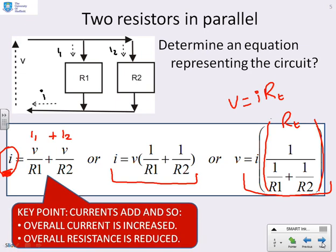So what are the key insights? The currents add, and so the overall current is increased. I've got more current with a parallel circuit than I would if I just had R1 on its own, or R2 on its own. And that's clear because I've done I equals I1 plus I2.